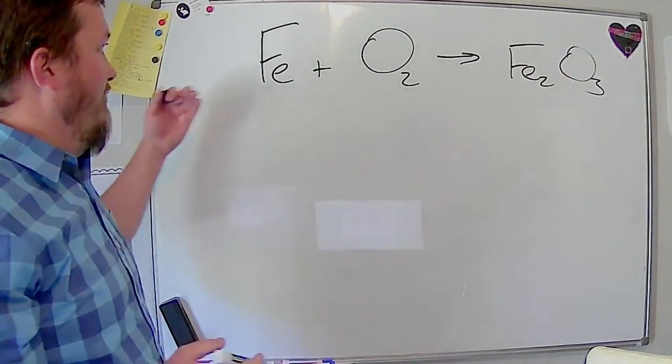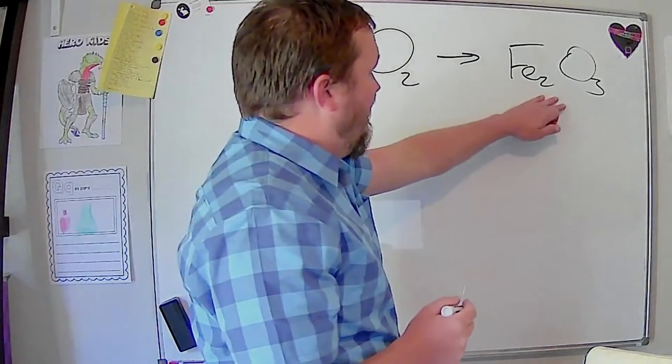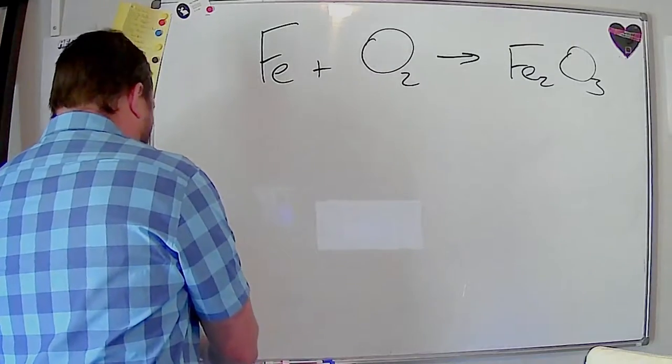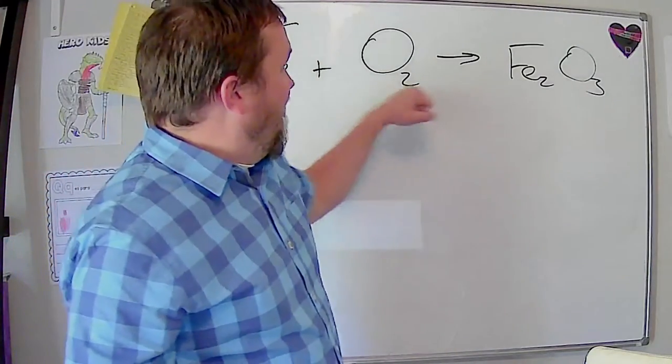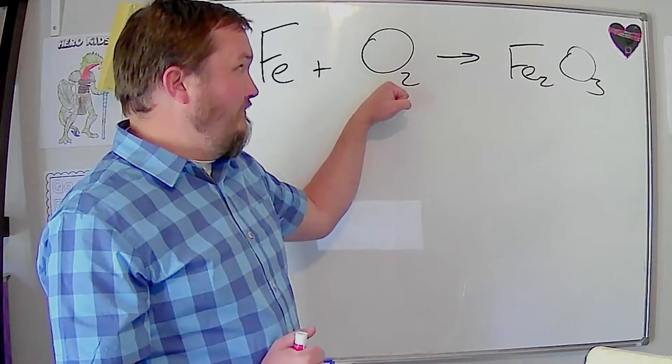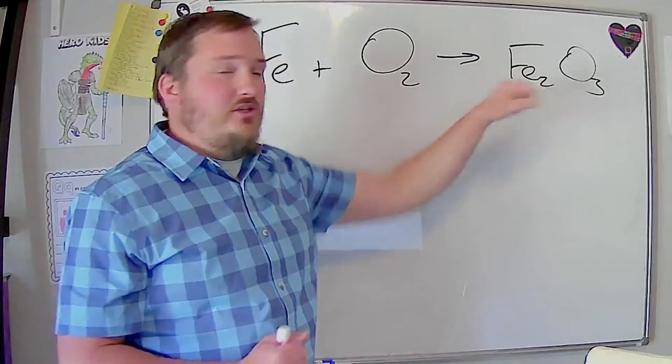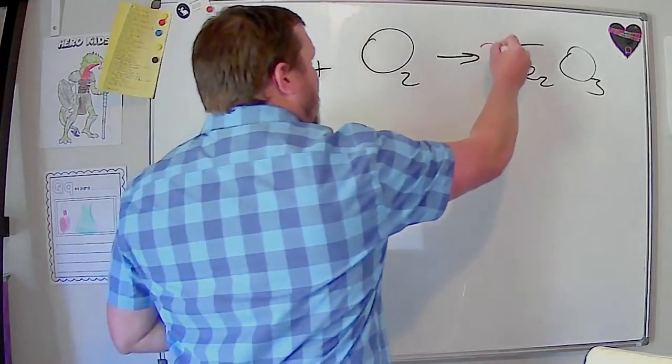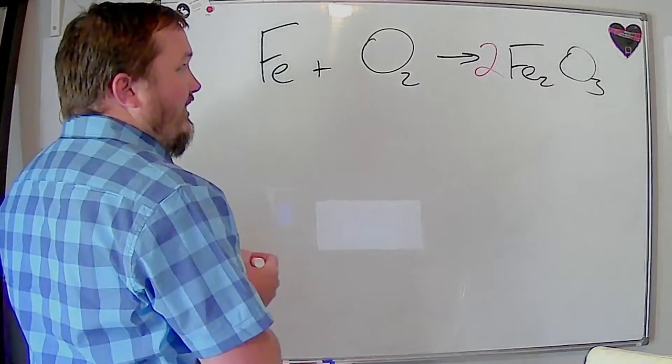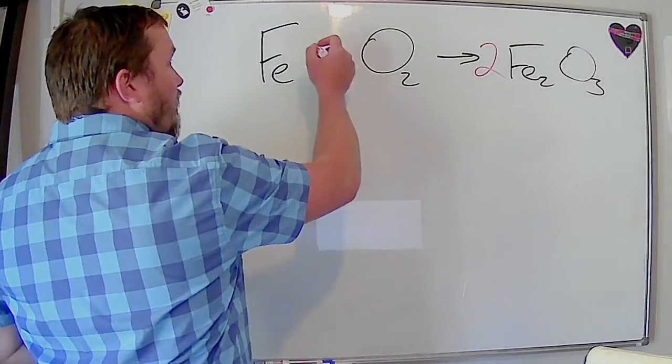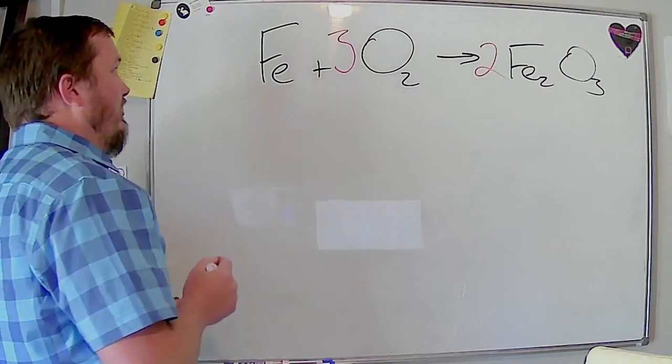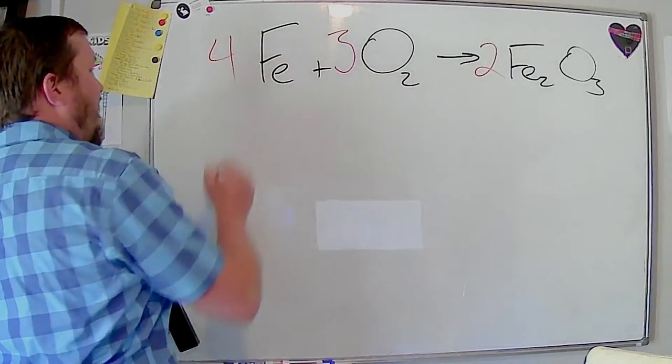So this is just iron metal rusting and oxygen and it makes iron three oxide. And if we want to balance this, we want to look at it and say, well, right off the bat, I know that I can only have an even number of oxygens on the reactant side. So I know I'm going to have to have an even number of oxygens over here. We can start by putting a two there. Then that means that in order to balance our oxygens, we're going to have to put a three in front of the O2 molecules and a four in front of the iron.